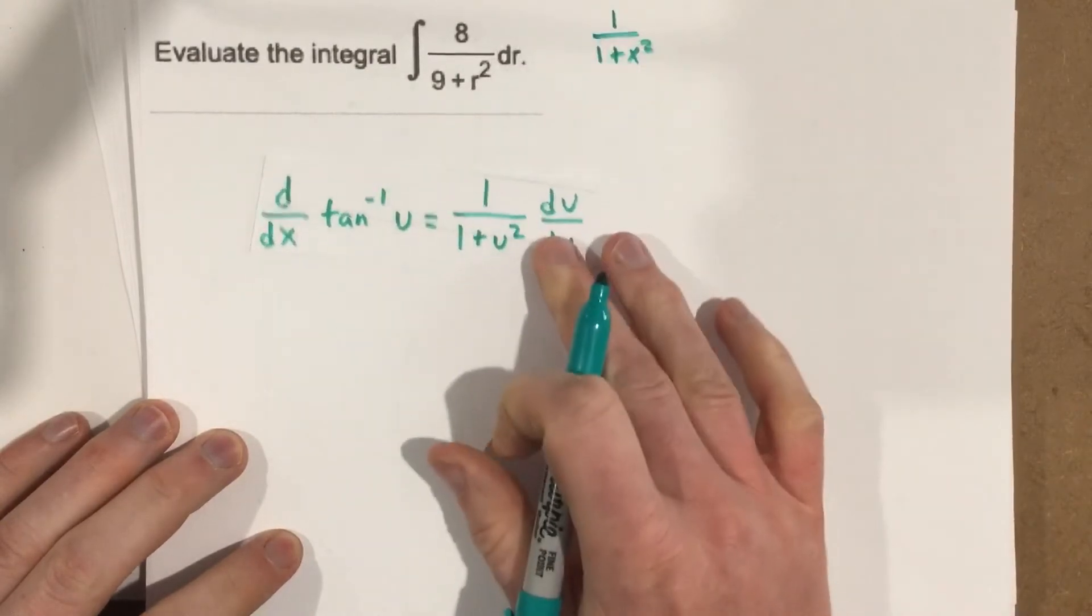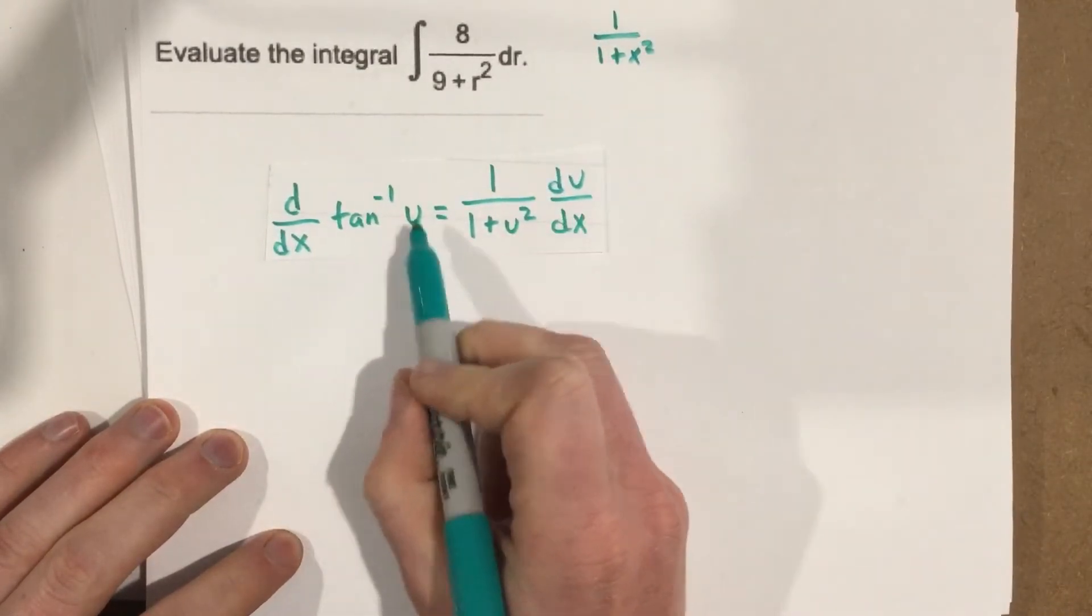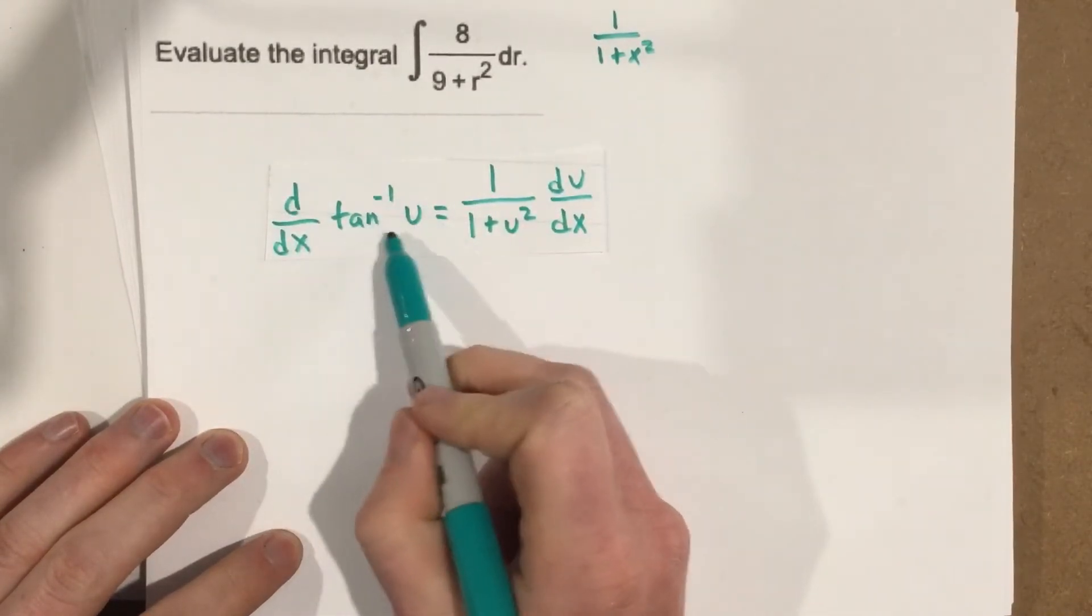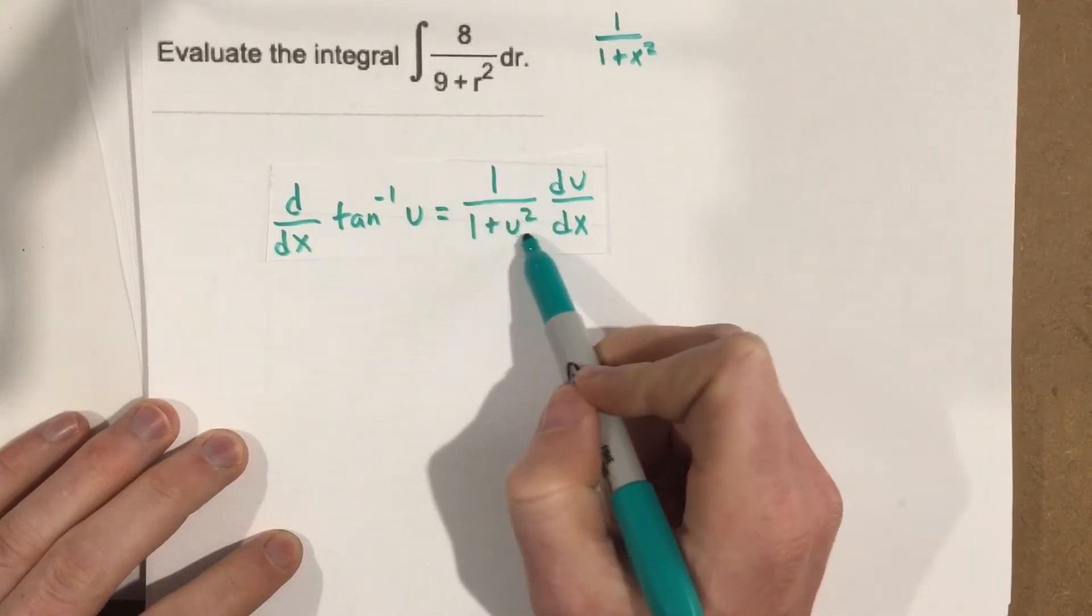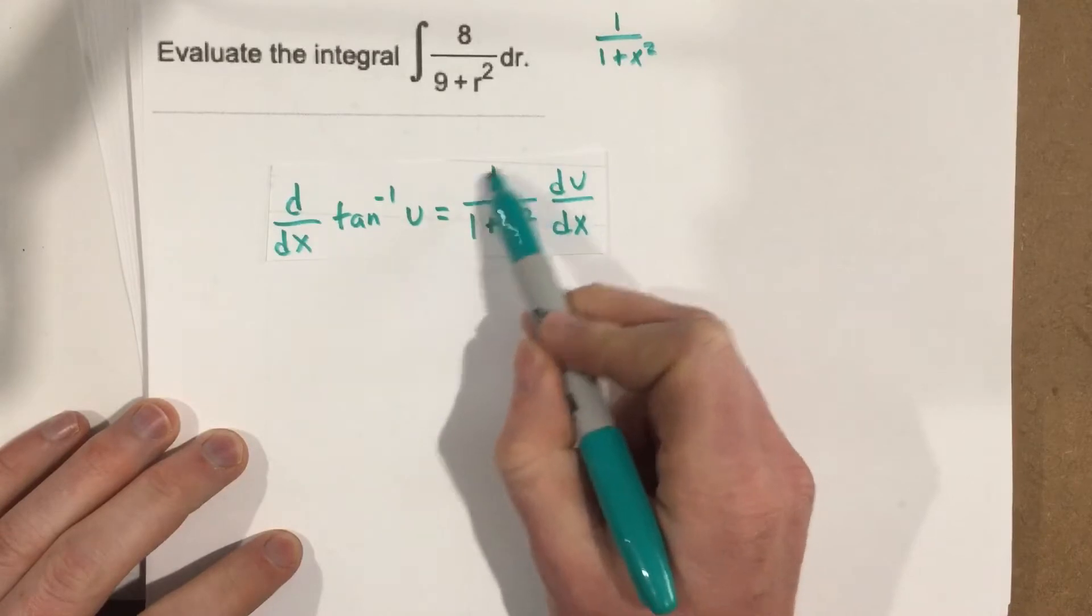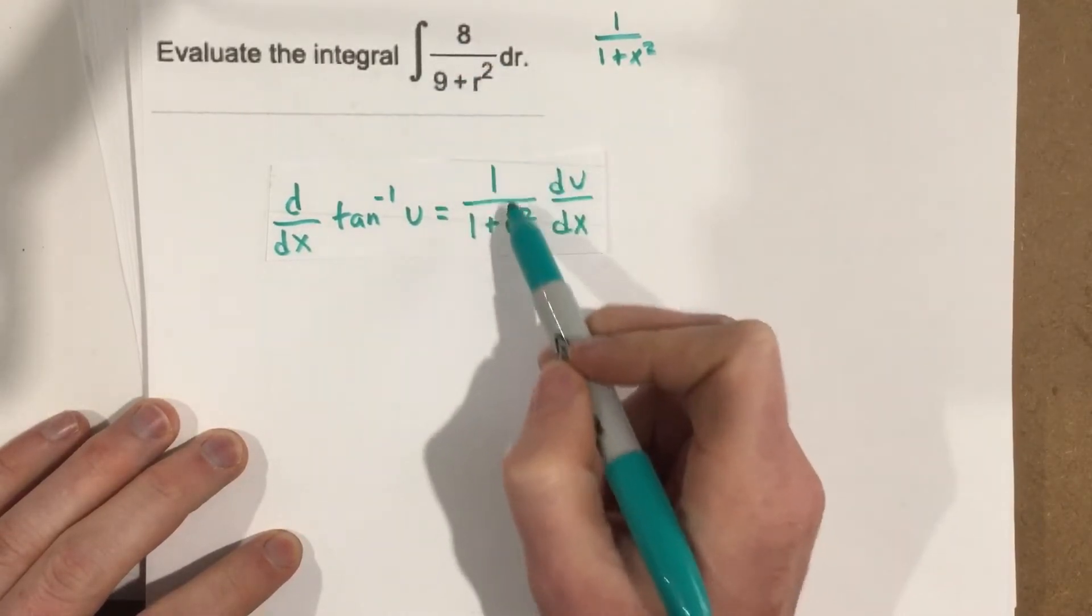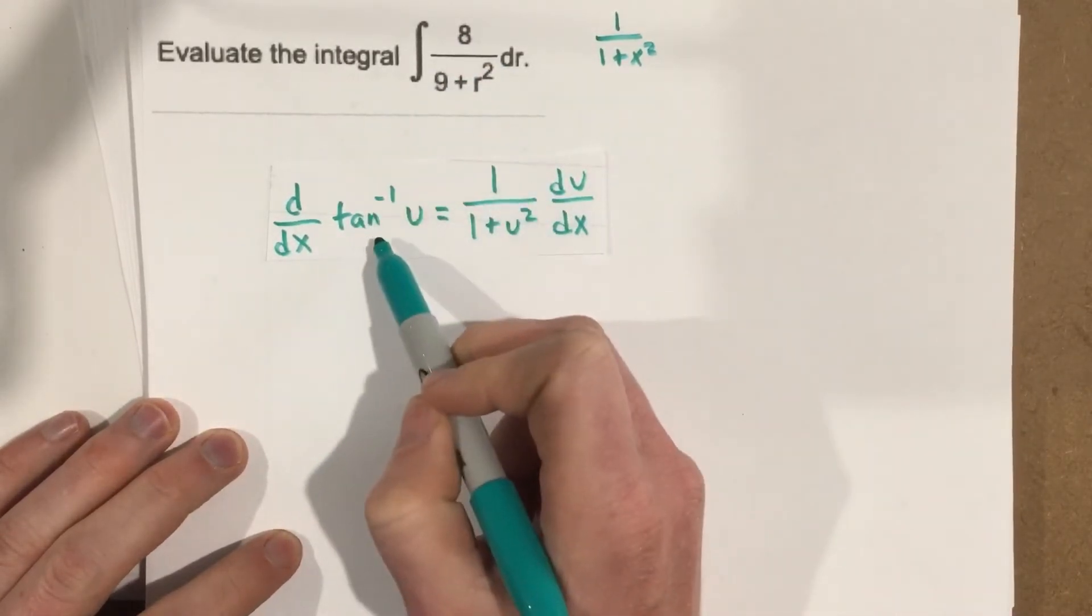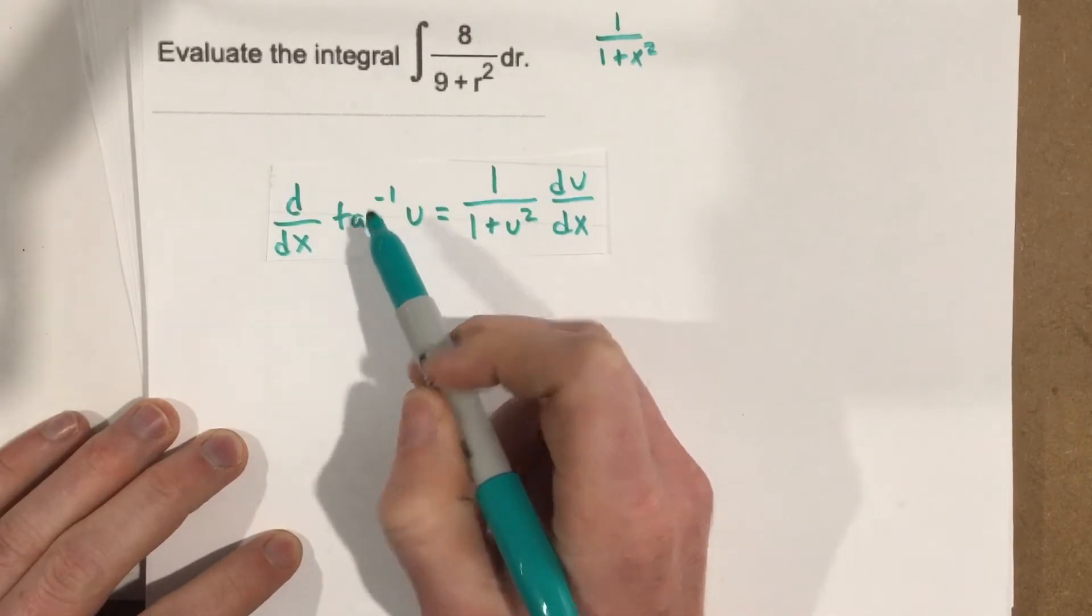If you look at this tangent inverse derivative, the derivative of tangent inverse is just 1 over 1 plus u squared. So we're really looking for getting this here so that when we do the integral, we actually get tangent inverse. That's kind of our goal here.